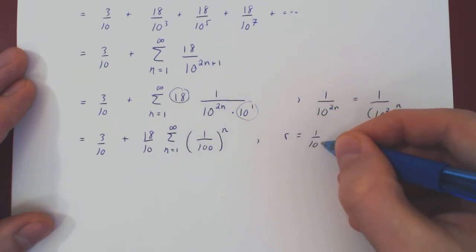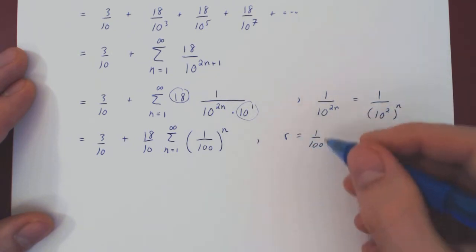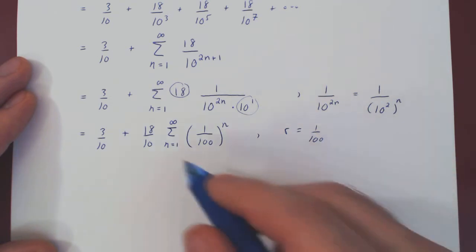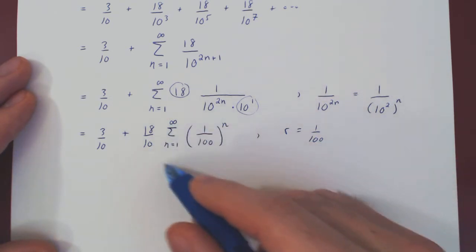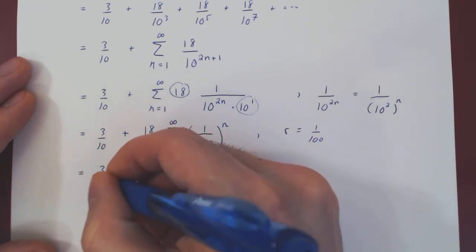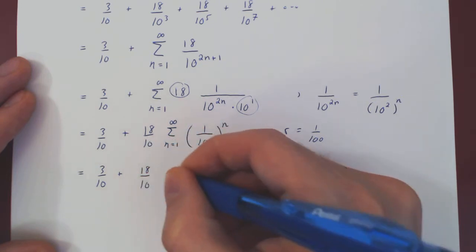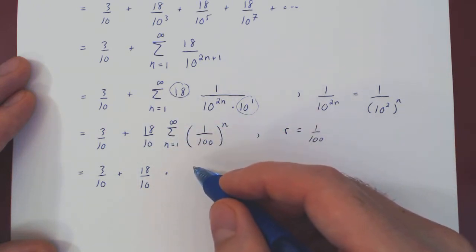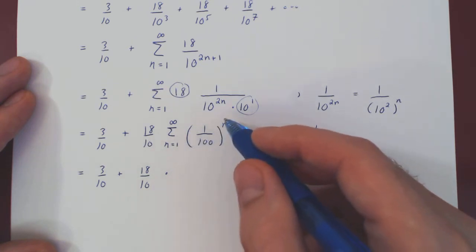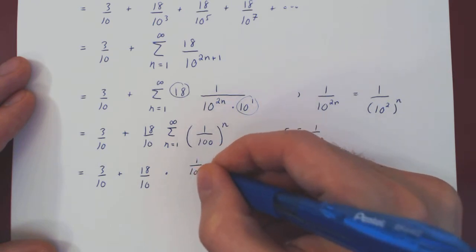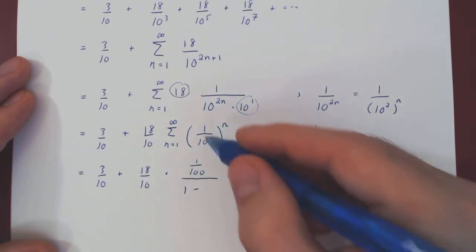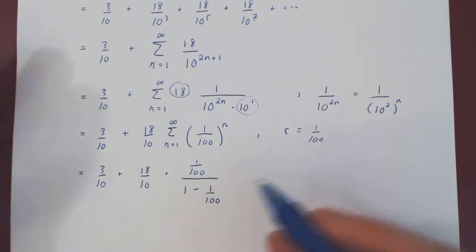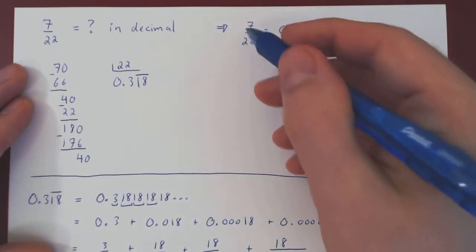So r is 1 over 100, which in absolute value is less than 1, so this geometric series converges, and we can find its exact value using our formula. We have 3 over 10 plus 18 over 10 times the series sum. Using the geometric series formula with first term 1 over 100 (when n equals 1), divided by 1 minus r, where r is 1 over 100. Now all that remains is to simplify, and hopefully we should retrieve 7 over 22.